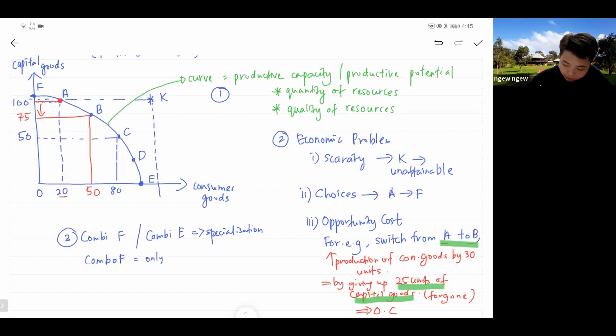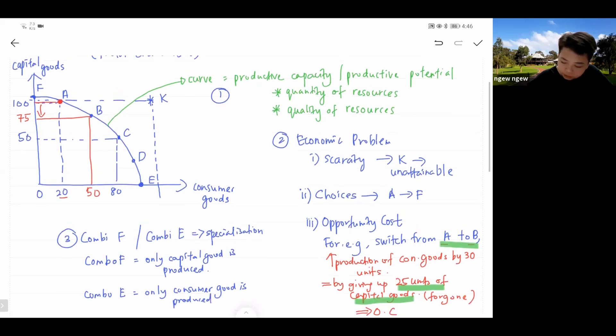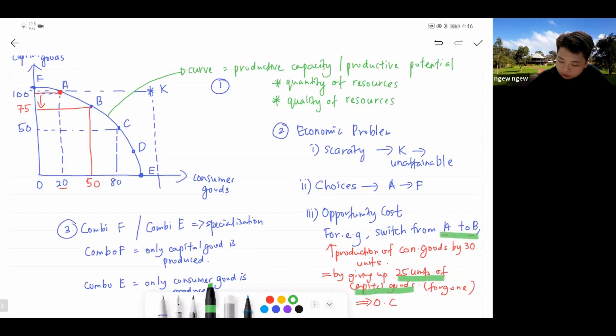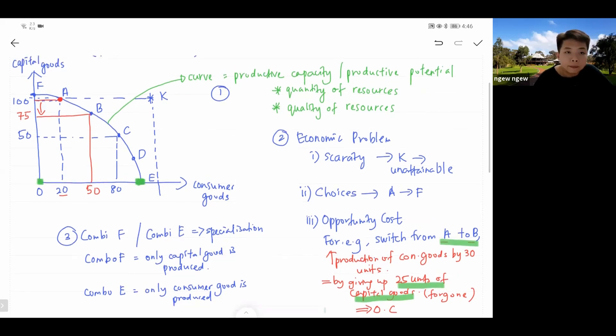You use all your resources to produce only capital goods. Likewise, for combo E, you use all your resources to produce consumer goods. Therefore, these two combinations are said to be specialization. Combination E, you specialize in the production of consumer goods, therefore you produce zero capital goods. Combination F, you produce only capital goods, therefore you produce zero consumer goods. That's how it works.